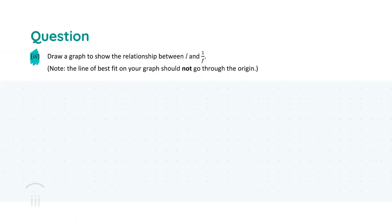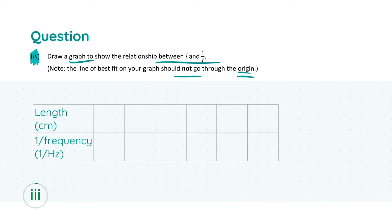Moving to part three, we're asked to draw a graph showing the relationship between L and one over F. The note says the line of best fit should not go through the origin, so don't force it. First, we need to find our values for L and one over F by taking the reciprocal of each frequency. I'm going to fill in the lengths in centimeters as given in the question.